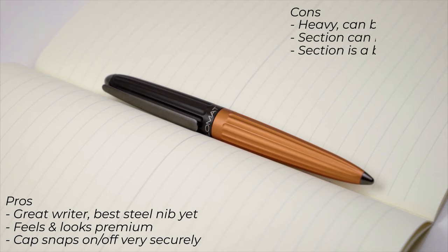Moving on to some of the cons of the pen. The pen is heavy and can be fatiguing on long writing sessions. I don't personally like metal sections, which this pen has, as I feel they can sometimes get very slippery. And lastly, the section is a bit on the slim side and I prefer a more shaped or thicker section, but your mileage may vary for the last two points.